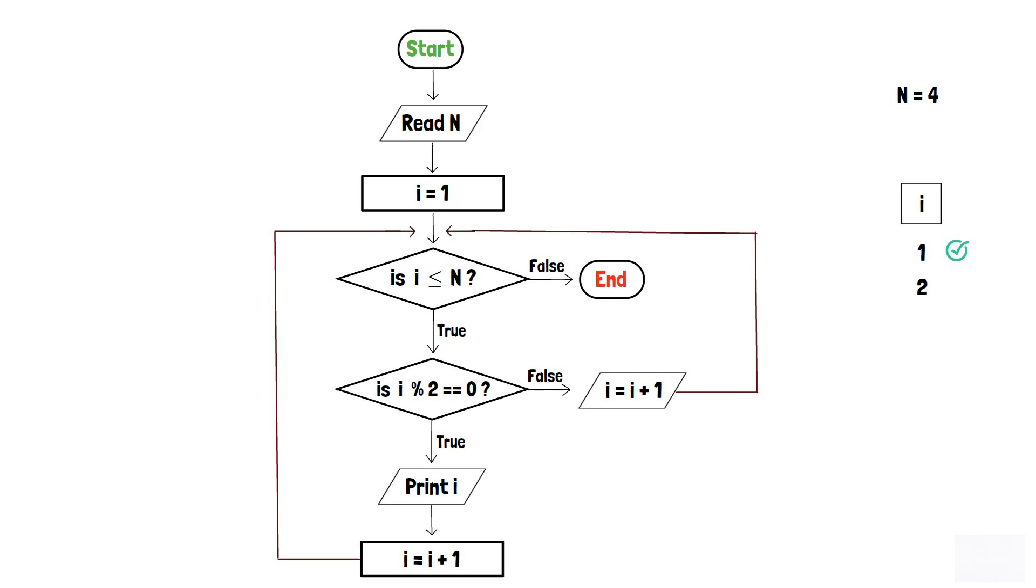Again, as 2 is less than 4, the condition in the first decision box is true. As a result, i is passed to the second decision box to determine evenness.